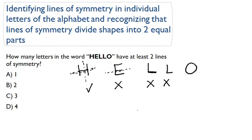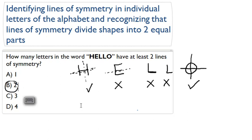Okay, lastly, O, our last chance. O has two lines of symmetry, so O works. So in the word hello, two letters have at least two lines of symmetry. Thank you.